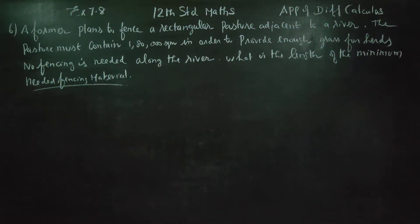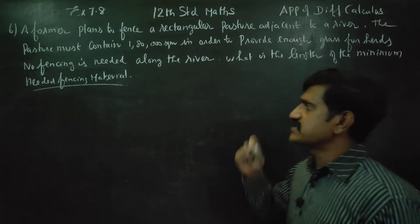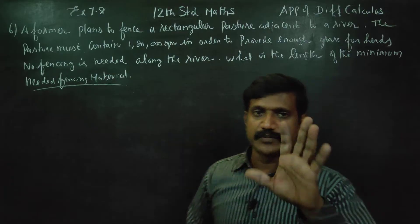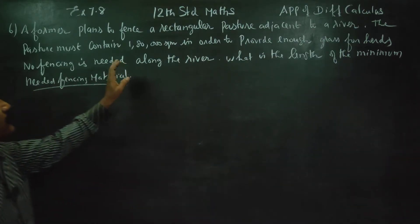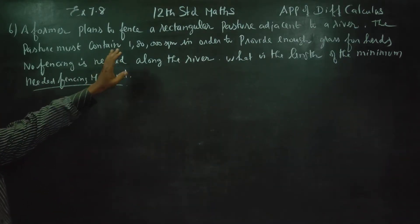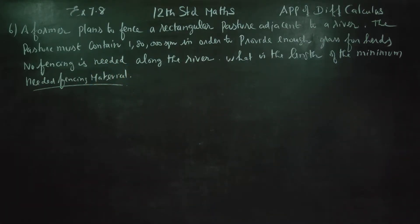Dear 12th standard students, I am Metro Karanagaran. In exercise 7.8, sum number 6, a farmer plans to fence a rectangular pasture.